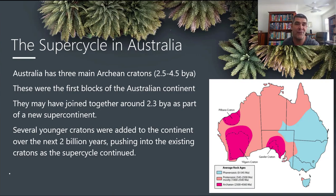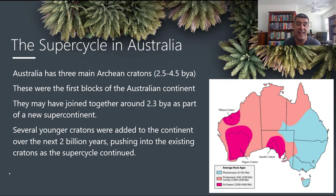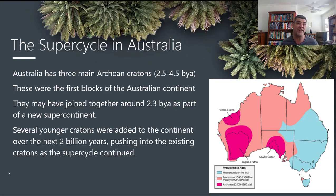A big shout-out to Mr. Guy of Fort Street High for some of the fantastic material he's been sharing with so many Earth and environmental science teachers, myself included. Australia has three main Archean cratons, and they are very ancient — almost since the formation of the Earth, pretty close in age. These three are the first identifiable blocks of the Australian continent, and they may have joined together around 2.3 billion years ago in the formation of a supercontinent.